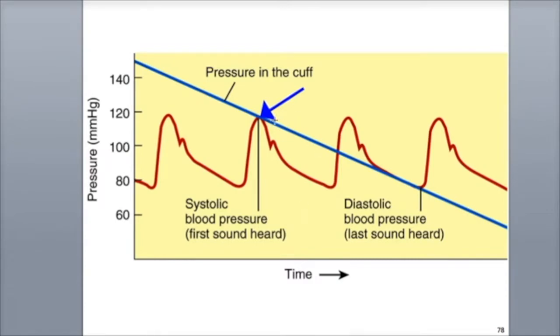The cuff is then further deflated, and the sounds eventually become too quiet to hear through the stethoscope. The last sounds heard through the stethoscope correspond to the diastolic blood pressure, which is the pressure generated by blood remaining in the arteries while the ventricle is relaxed.